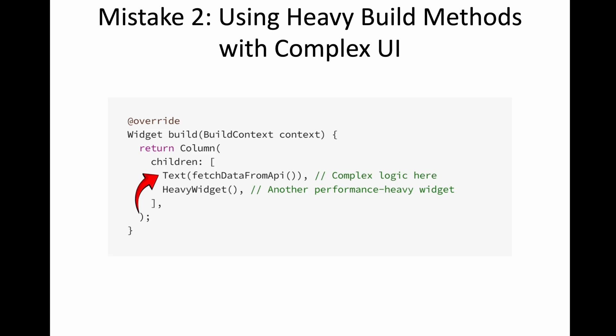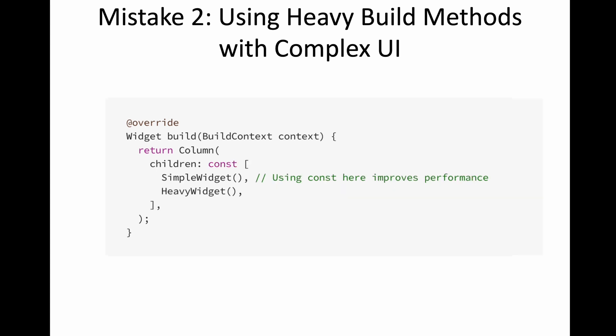Next, heavy build methods cause the UI to be slow. For example, here I have a Text widget that is calling an API directly — this could cause unnecessary rebuilds of the UI. You want to separate it into a simpler widget that fetches the data and renders the text. Never call an API directly from your UI. You can also use const to help optimize performance.